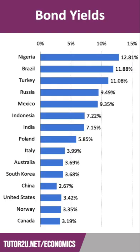So this chart — really interesting — shows the yield on 10-year government bonds in the biggest economies worldwide, as of the middle of September 2022. In that time period, it was Nigeria that had the highest bond yield at 12.8%, so effectively just under 13%. High bond yields also in Brazil and Turkey — all over 10% — with Russia and Mexico not too far behind.